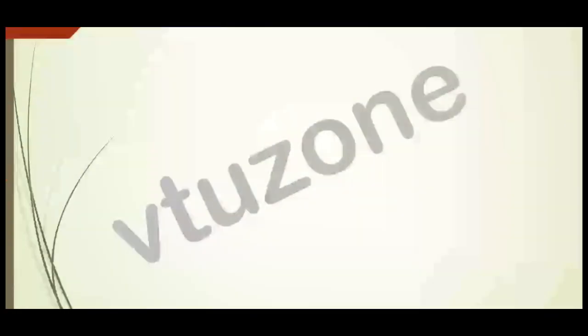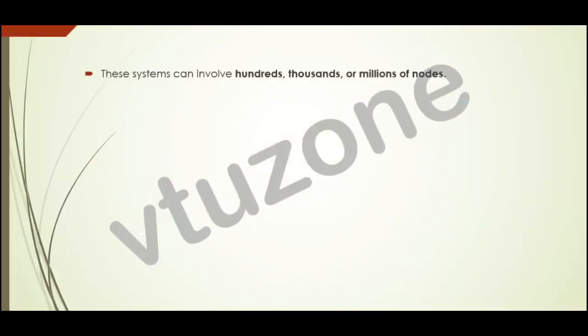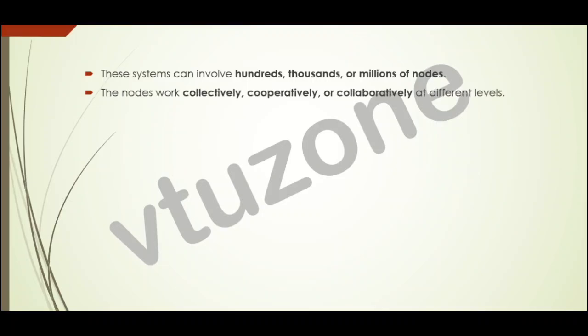These systems can involve hundreds, thousands, or millions of nodes — each type of system can have millions of connected computers working together. The nodes work collectively, cooperatively, or collaboratively at different levels. Collectively means performing tasks together, while cooperative means sharing some work.